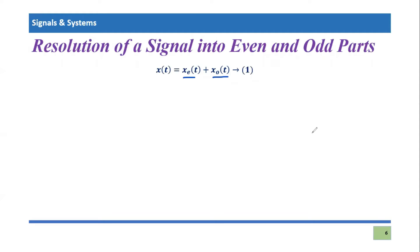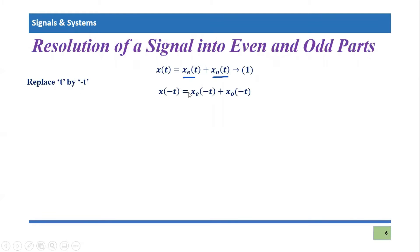even and odd signals, the time reversal version is always very important for the signal we are considering. So let's take the time reversal of it. Mathematically, one can do it by replacing t by minus t. So we have to replace t by minus t.